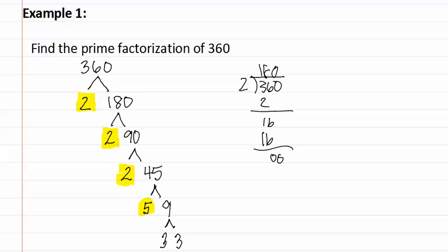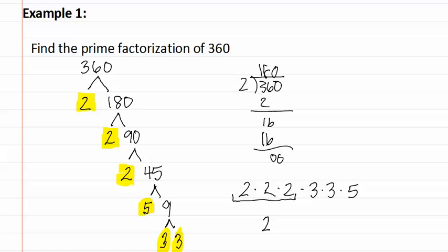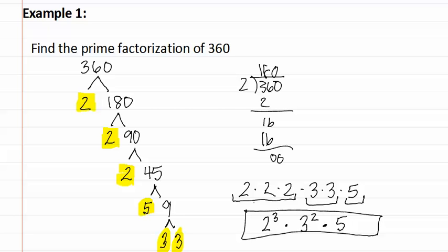45 ends in five, so we know a five goes into it nine times. We highlight the prime number and continue to factor the composite number. Nine is three times three. We have now found all of the prime numbers in 360. We can now write them all out in a list, usually going from the smallest to the largest. There are three twos, two threes, and one five. Since there are more than one of the same digit, such as three twos, we use exponents. We write it as two to the third times three to the second times five.